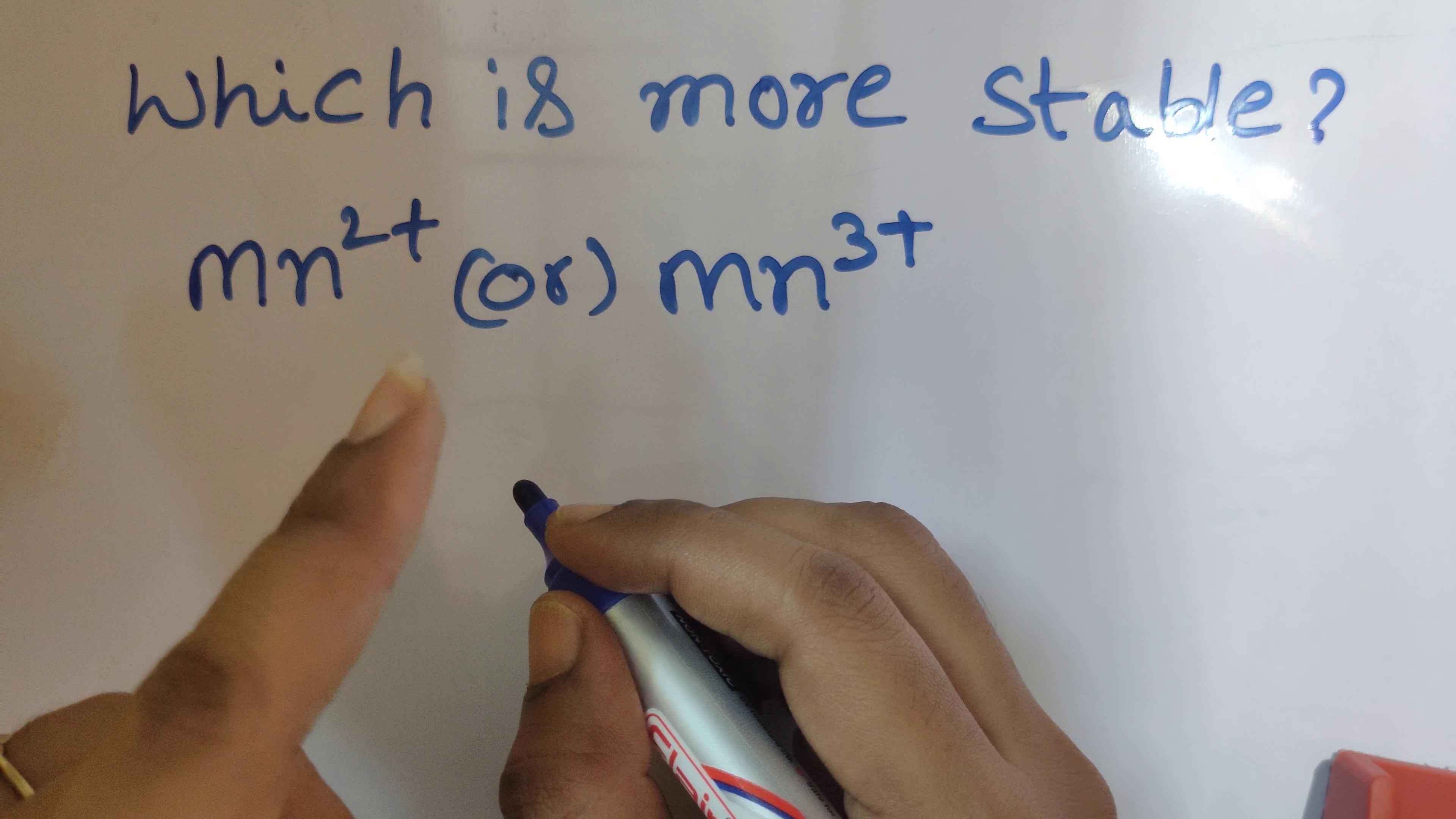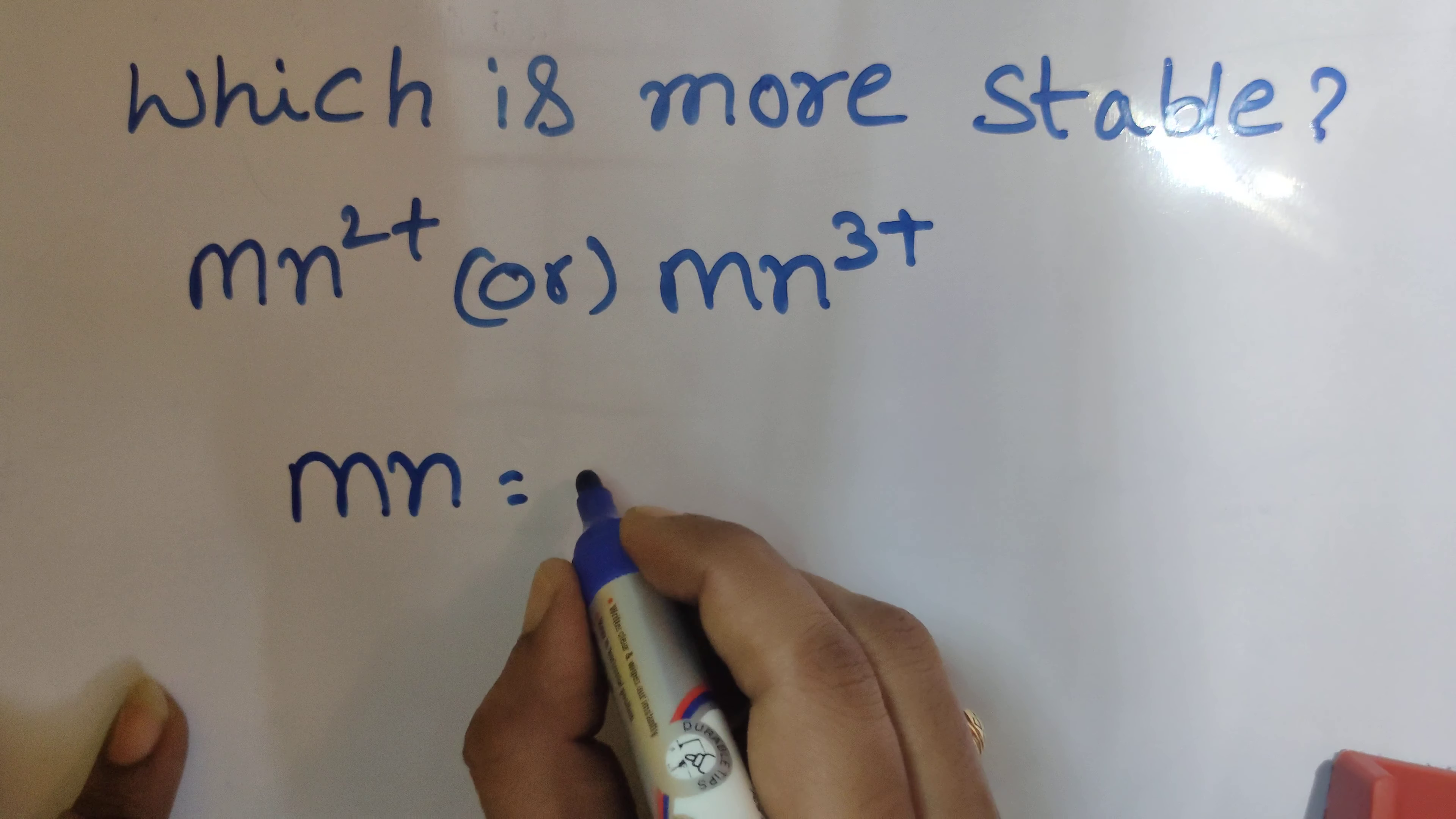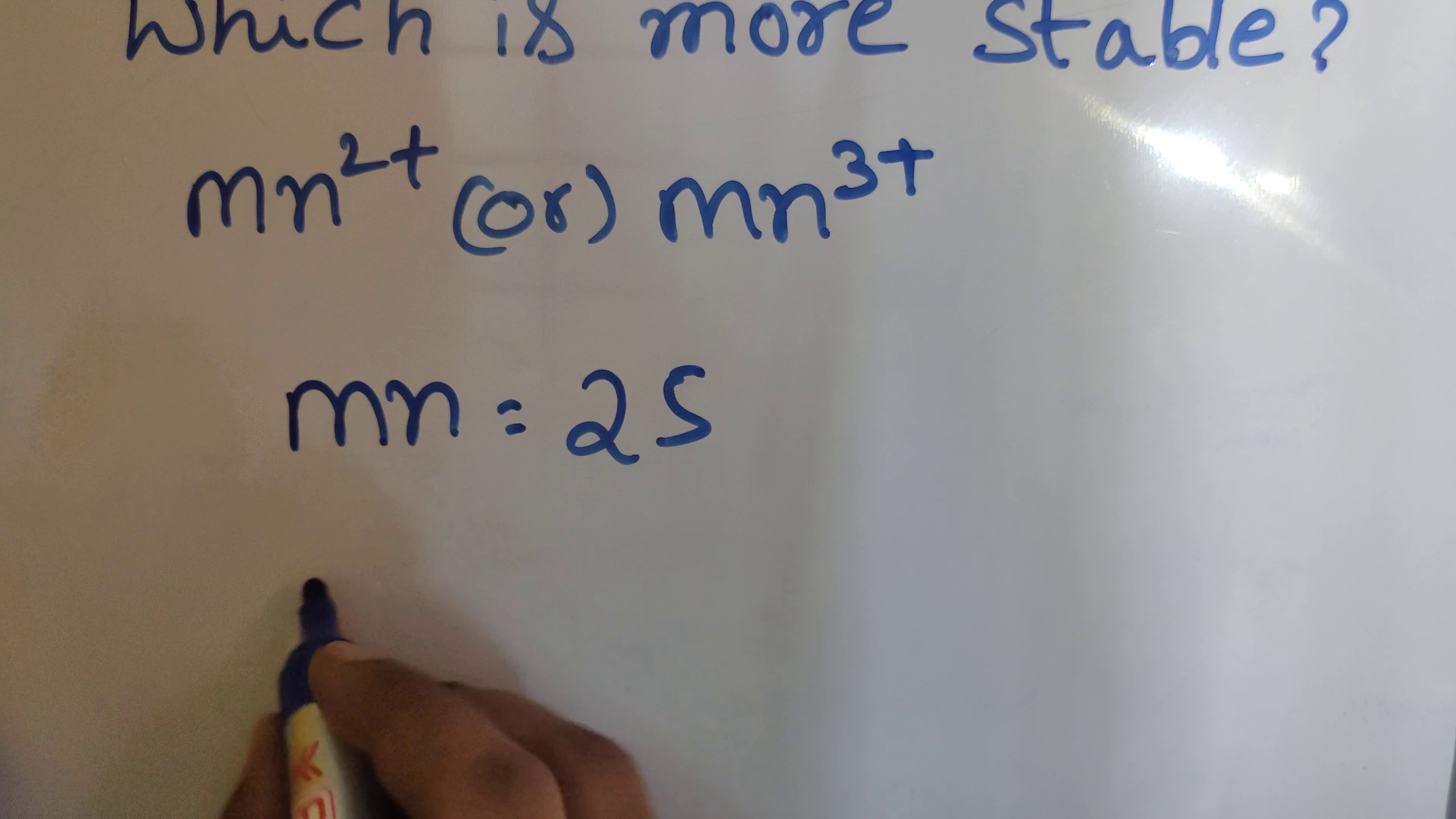First, you should know the atomic number for the given atom. Manganese has atomic number 25.